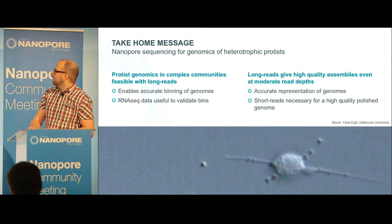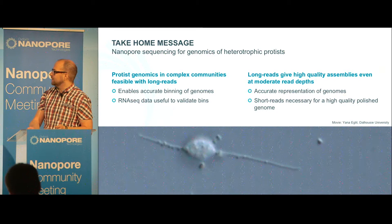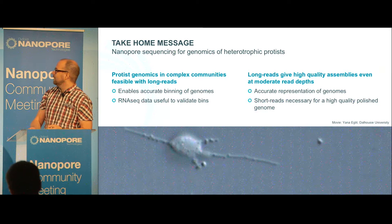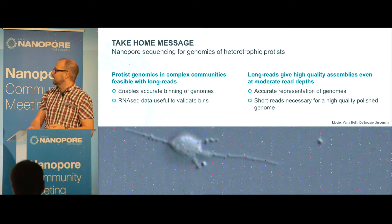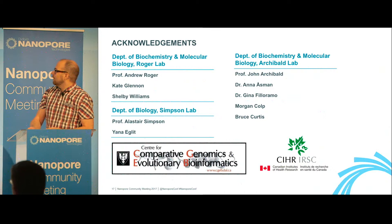To conclude, protist genomics in complex communities seems feasible using MinION sequencing. You can get accurate binning of genomes, and RNA-seq data has been useful to ensure bins are clean. This approach allows us to get accurate genome representations for entirely new groups of organisms. Short reads remain necessary to achieve high-quality assemblies.